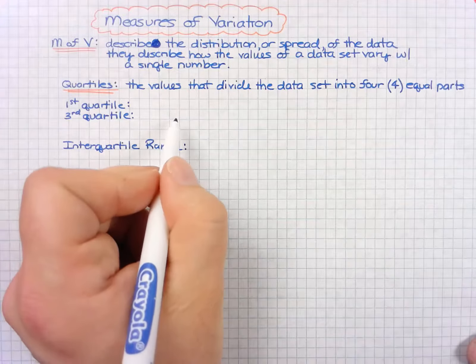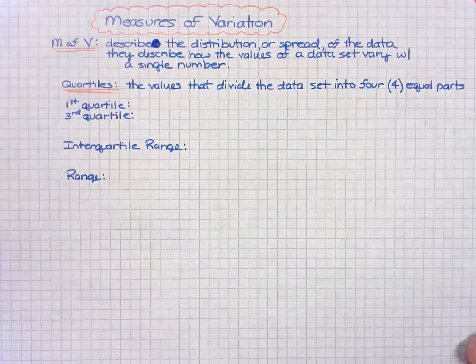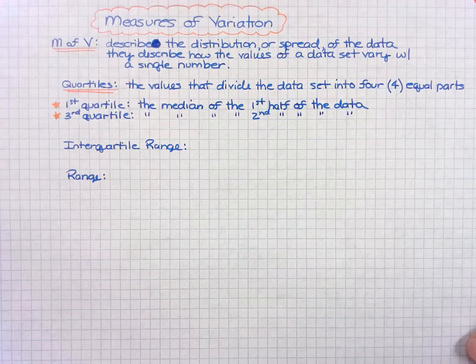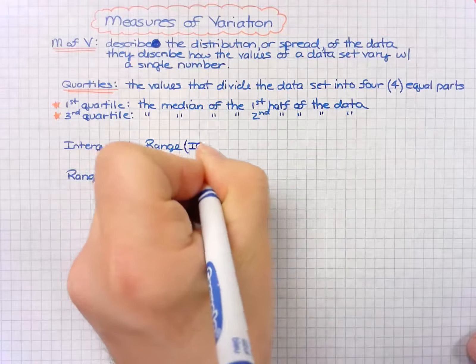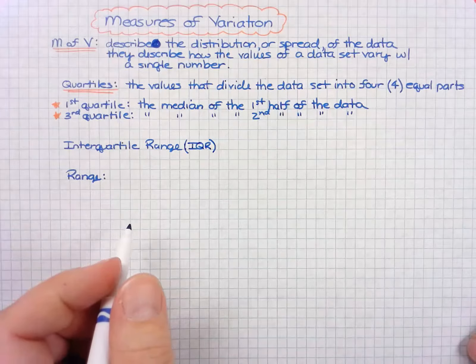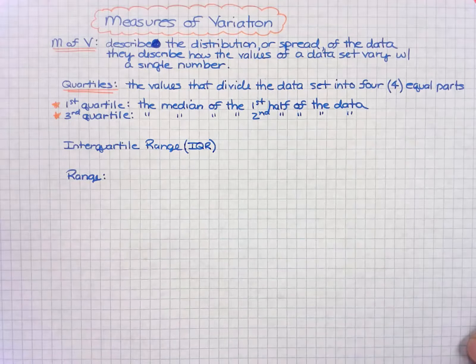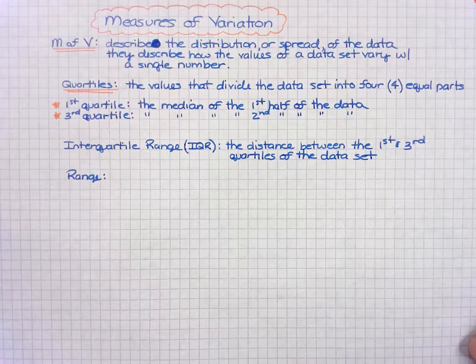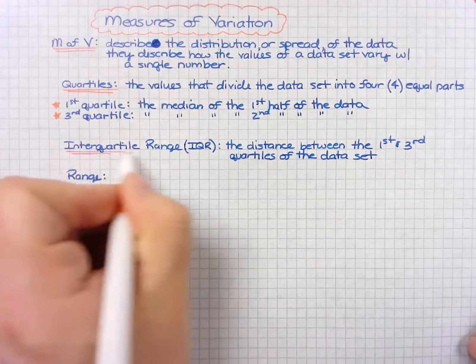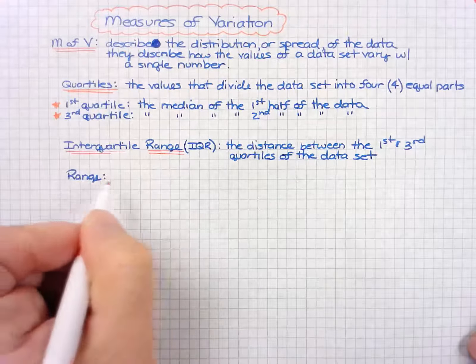The first quartile is the median of the first half of the data. The third quartile is the median of the second half of the data. The interquartile range, sometimes seen as IQR, is the distance between the first and third quartiles of the data set.